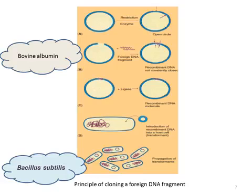The second step involves mixing the foreign DNA molecule — the desired genes — with the restricted vector. In the third step, DNA ligase is used to link the ends of the desired gene and the restricted plasmid to obtain a recombinant DNA molecule. This recombinant DNA molecule is then introduced into the host cell, now called a transformant. A cultivation medium is used for propagation of the transformant to obtain bovine albumin in large amounts.